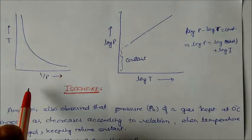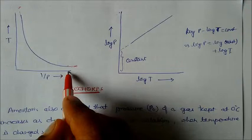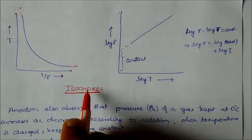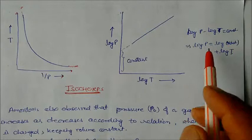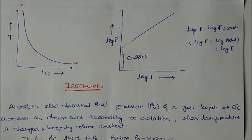If you take T versus 1/P graph, this graph will end at infinity. We can write this PT graph in terms of logarithm: log(P/T) = constant, so log P - log T = constant, or log P = log constant + log T. We have an intercept, a constant graph with log P versus log T. These are the graphs of the isochore.